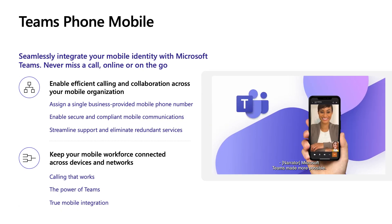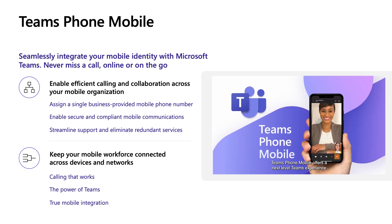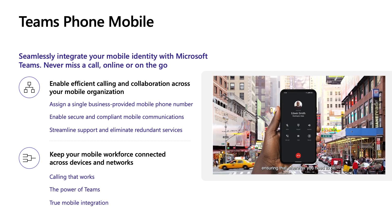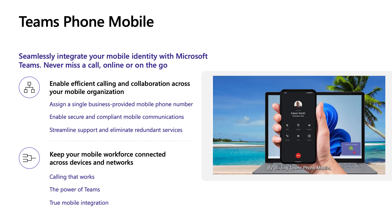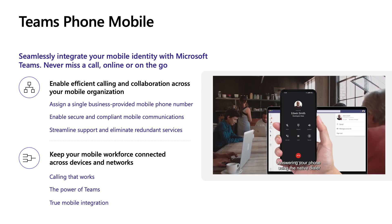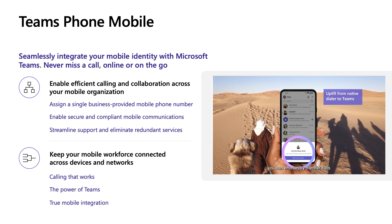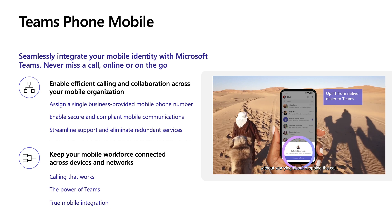Now let's talk about our newest offering, Teams Phone Mobile. Teams Phone Mobile is a seamless way to integrate your users' mobile identities with all the Microsoft Teams collaboration and productivity tools. With Teams Phone Mobile, a single SIM-enabled phone number serves as your desk phone number, your mobile number, and your Teams number. It's really easy to move calls across networks and devices without any call interruptions. You can easily transition calls from your cellular service on the go to Wi-Fi once you get to the office, and then bring in rich video calling enabled by VoIP. You can also get access to call history, voicemail, and transcriptions in Teams and on your mobile device.